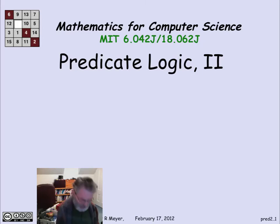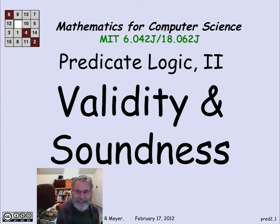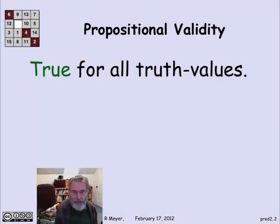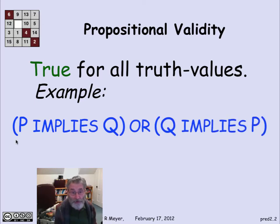It's time to examine the basic notions of validity and soundness as they come up in the context of the predicate calculus. Remembering how that worked for the propositional calculus, for propositional formulas, something was valid in the propositional logic meant it was true in all truth environments, true for all possible truth assignments to the propositional variables.